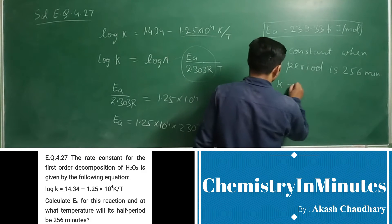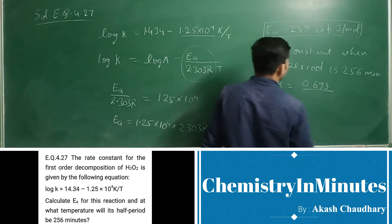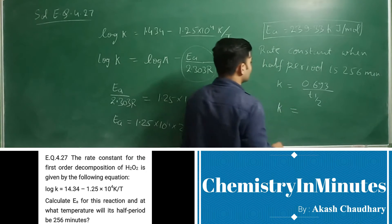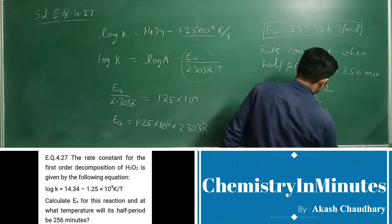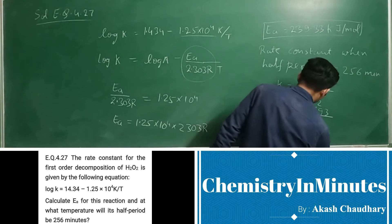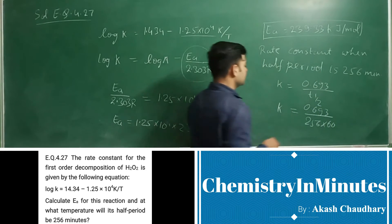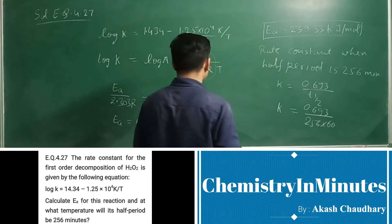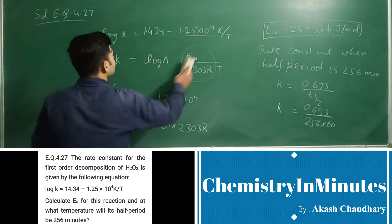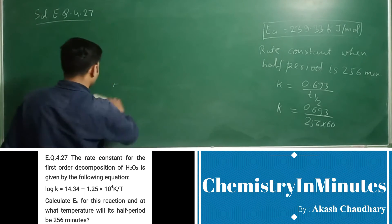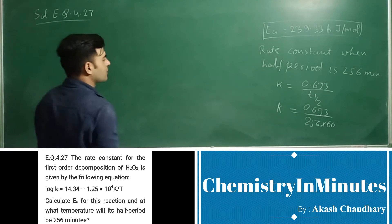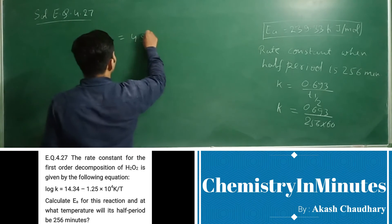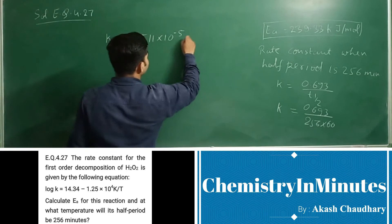k equal to 0.693 upon t half. From here, k equal to 0.693 upon t half is 256 minutes and we will convert it into seconds, 256 into 60. From here, the value of k will get as 4.511 into 10 raise to the power minus 5 second inverse.